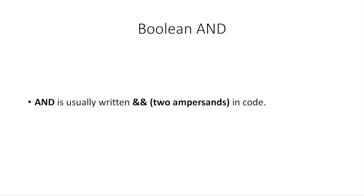So this is what AND is used for — usually to add on more conditions that must be true in order for the whole thing to be true. In code, we usually write this with two ampersands. That symbol is called an ampersand. There are two of them usually in code when you want to say AND, and usually there are spaces around them as well.